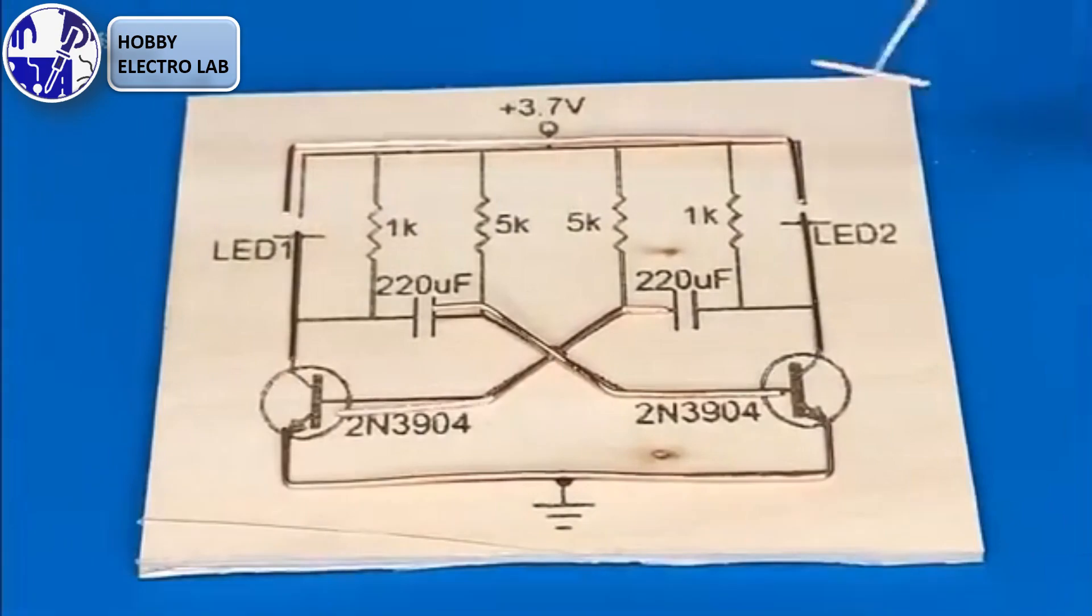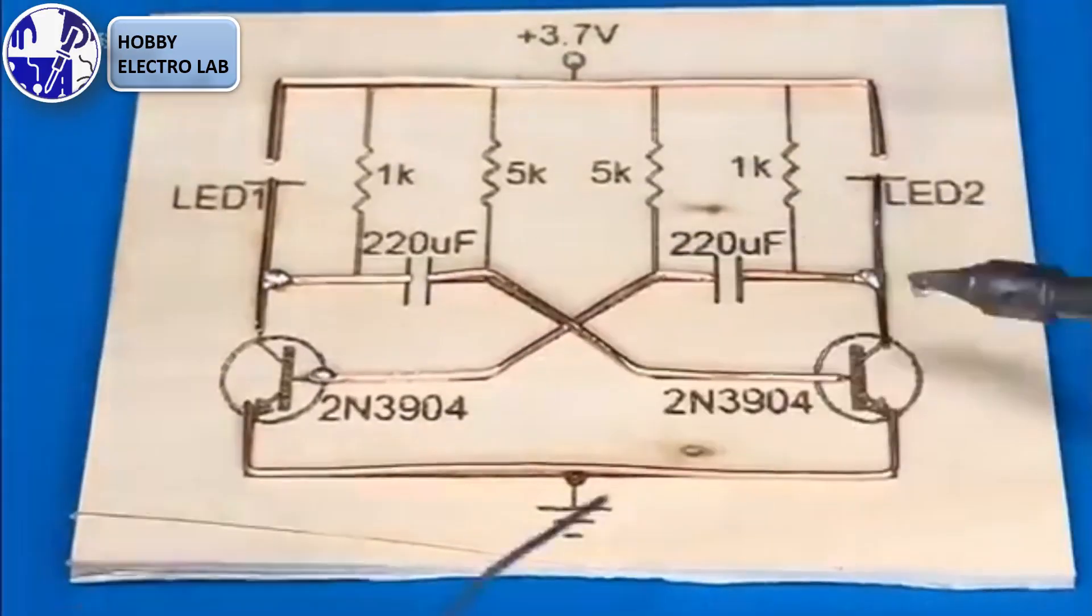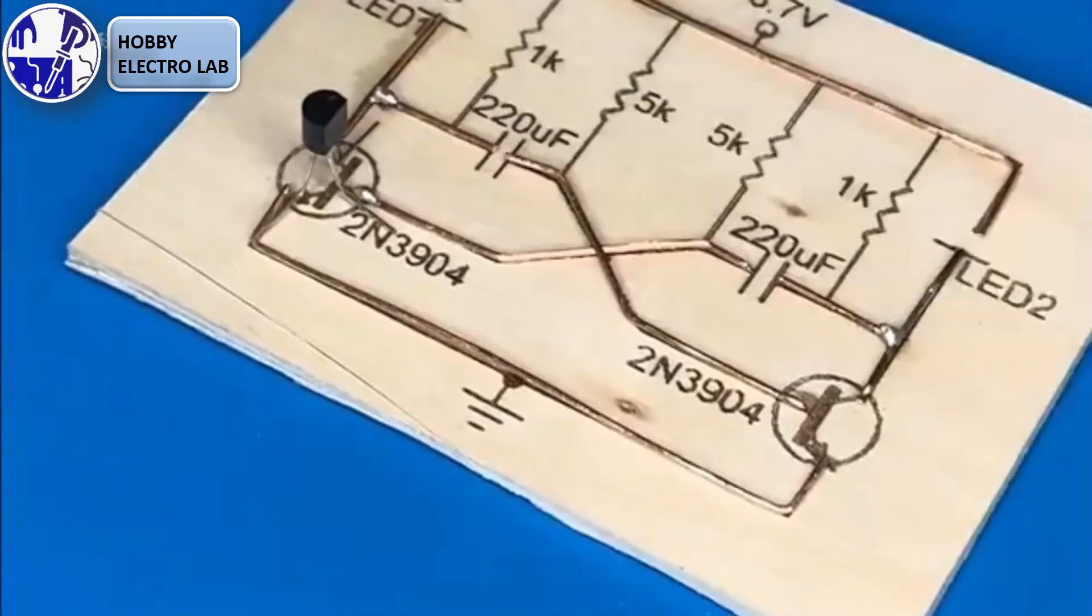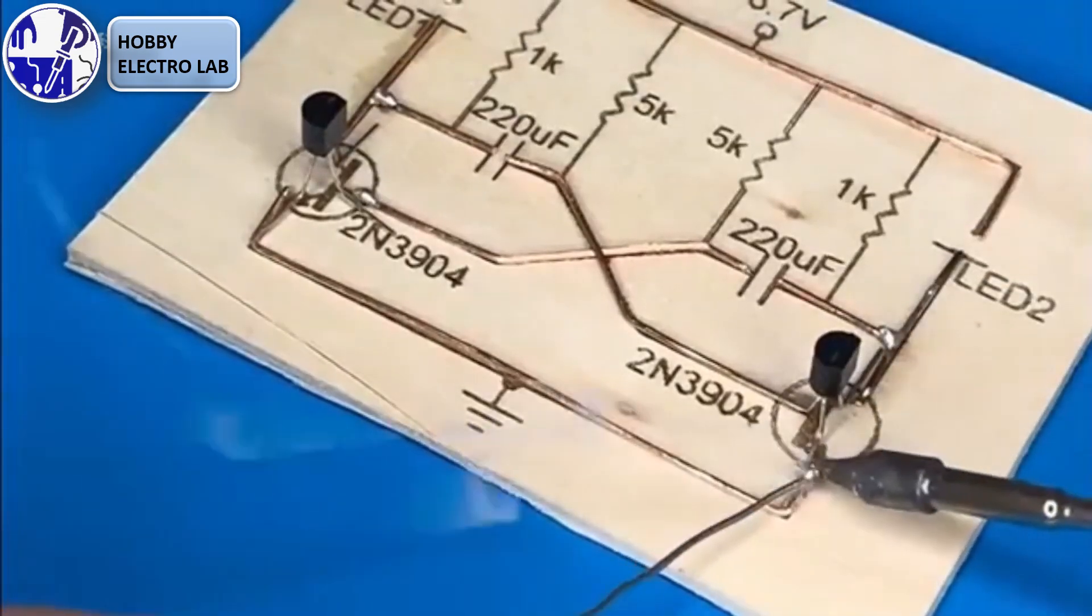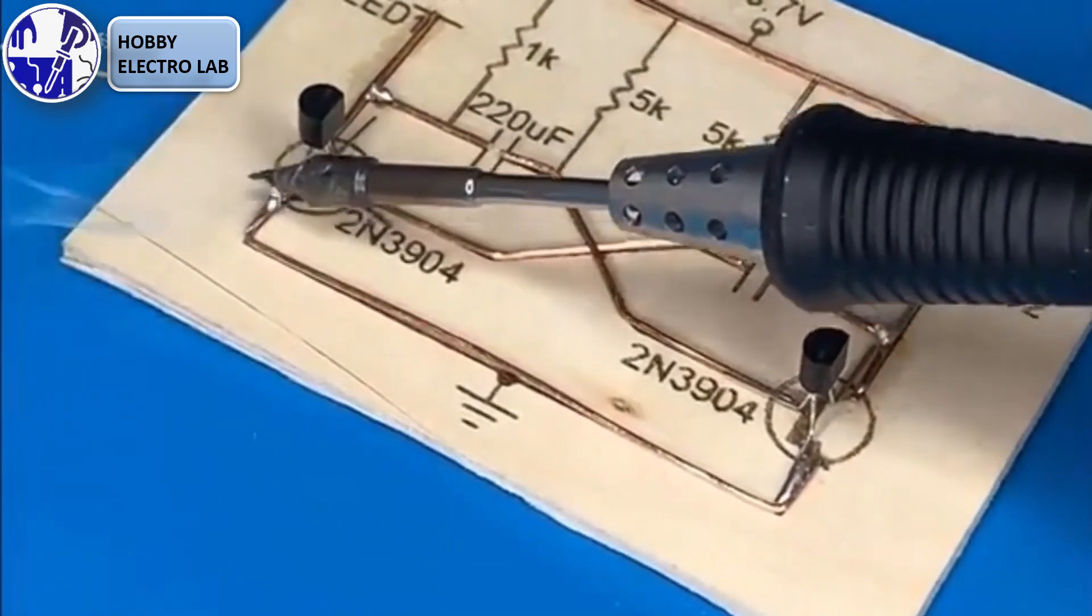After finishing your PCB, carefully place the connection wires onto the PCB lines as shown on the screen. Ensure each wire aligns correctly with the designated paths for a smooth and functional circuit.